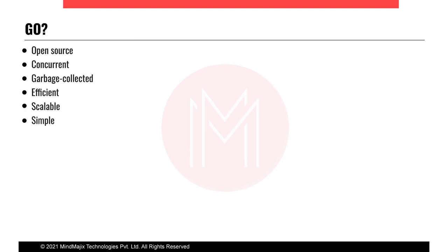Starting with why Go: Go is a fast-growing programming language in the market. It's been around for about a decade and we've been transforming all back-end products into Go, replacing traditional programming languages like Java and Python. Industry leaders are adopting Go in their products and platforms.